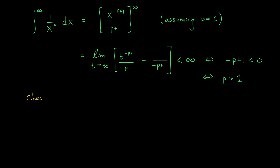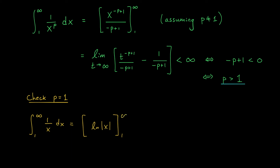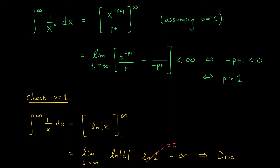The only case left to check is p equals 1. The integral test assumptions are still satisfied; we just have a different antiderivative. The antiderivative of 1 over x is ln of the absolute value of x, evaluated from 1 to infinity. Taking the limit as t goes to infinity of ln of t minus ln of 1: ln of 1 is 0 and ln of t blows up to infinity, so the integral diverges and therefore the series diverges. Note that p equals 1 corresponds to the harmonic series — the sum of 1 over n — and we now have a new proof of its divergence using the integral test.